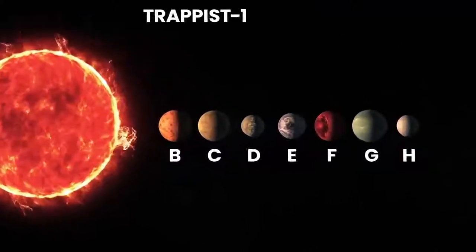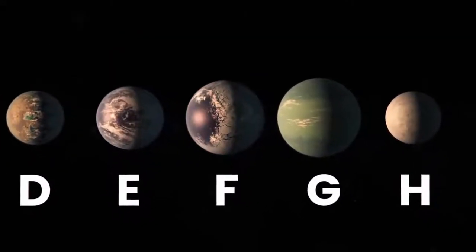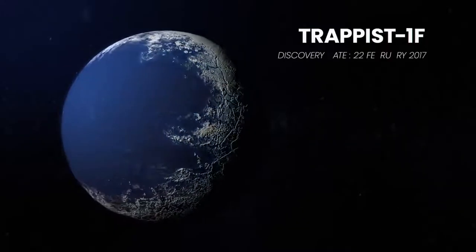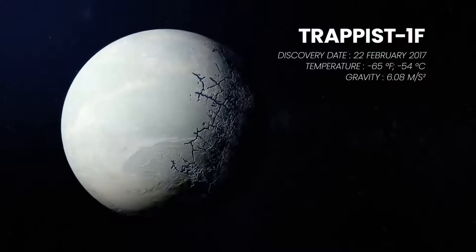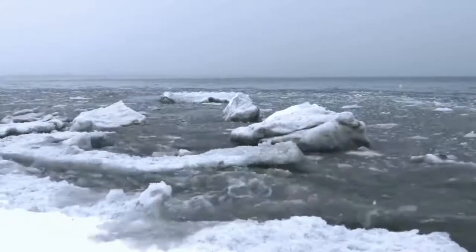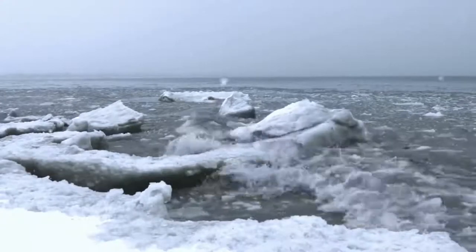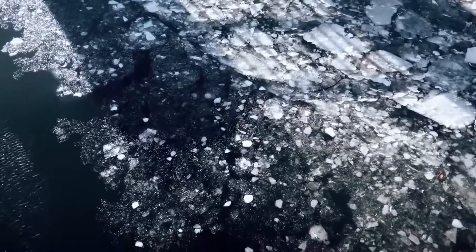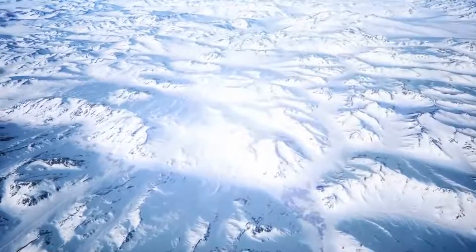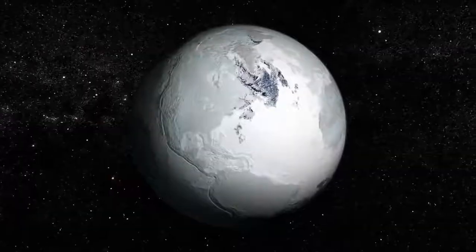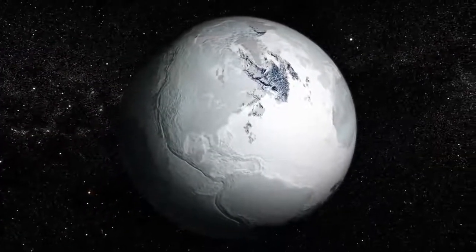Trappist-1f is likely a rocky world like ours, but is under a massive water-steam gaseous envelope at very high pressure and temperature. This planet could very well have a thick ocean of liquid water covered by an atmosphere rich in abiotic oxygen. However, this exoplanet may likely be no more habitable than any other gas or ice giant with water clouds in its atmosphere.